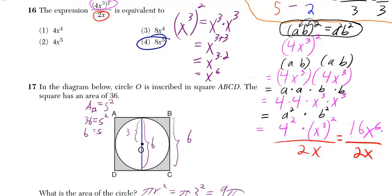Using similar logic, let's look at the stuff in pink. 4x cubed squared is the same thing as 4x cubed times 4x cubed. You can rearrange it so it's 4 times 4 times x cubed times x cubed. 4 times 4 is 4 squared, x cubed times x cubed is x cubed squared.